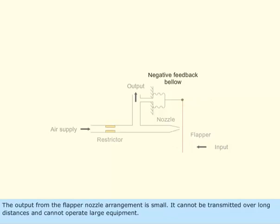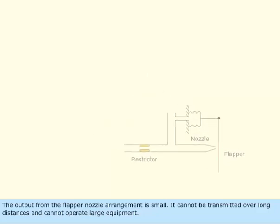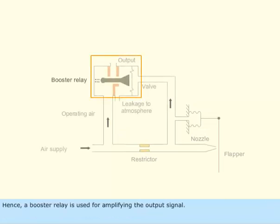The output from the flapper nozzle arrangement is small. It cannot be transmitted over long distances and cannot operate large equipment. Hence, a booster relay is used for amplifying the output signal.